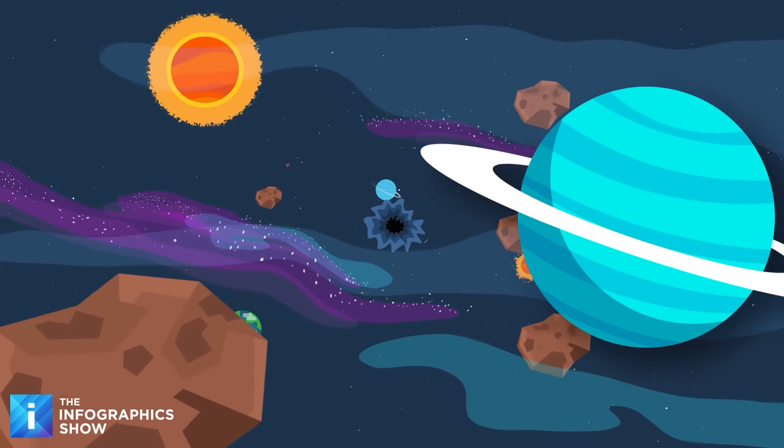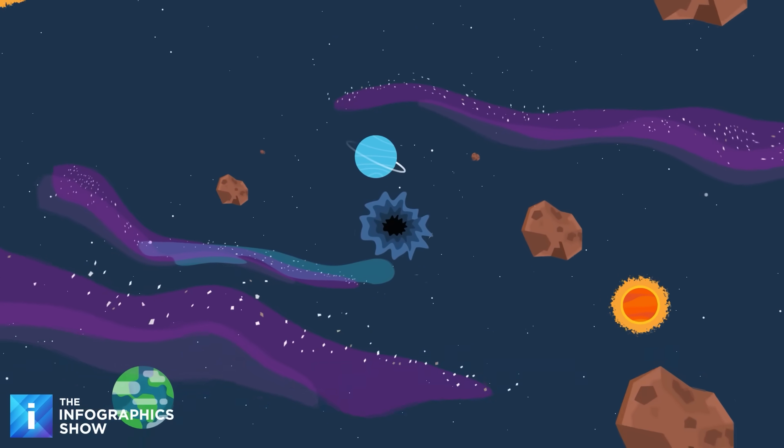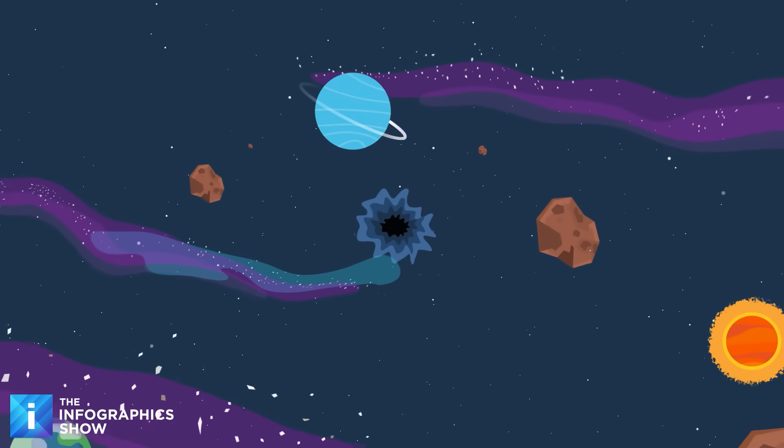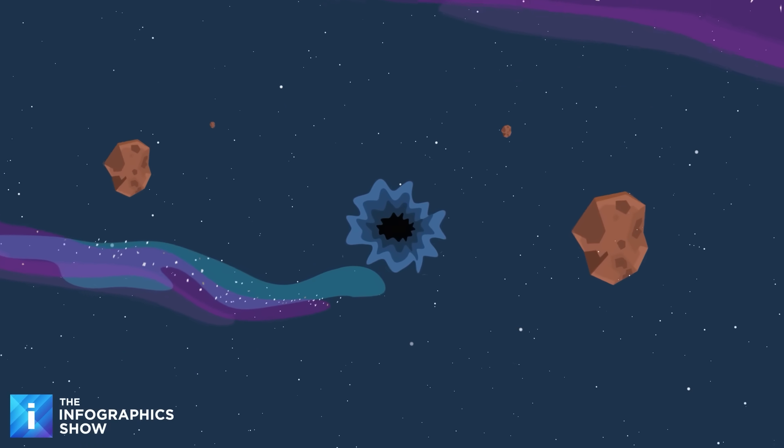So for now, black holes are outnumbered. They are the minority in a universe dominated by normal matter. Stars, planets, gas clouds, and all the everyday stuff that makes up galaxies. But they are playing the ultimate long game.